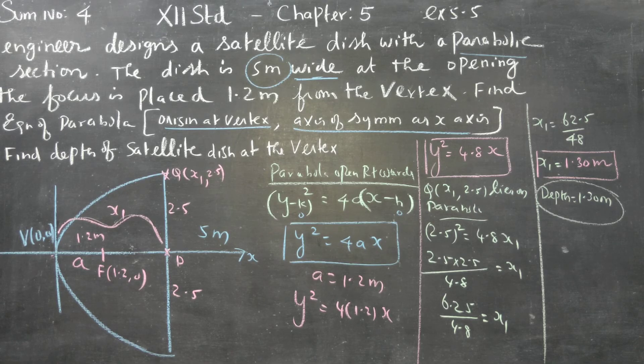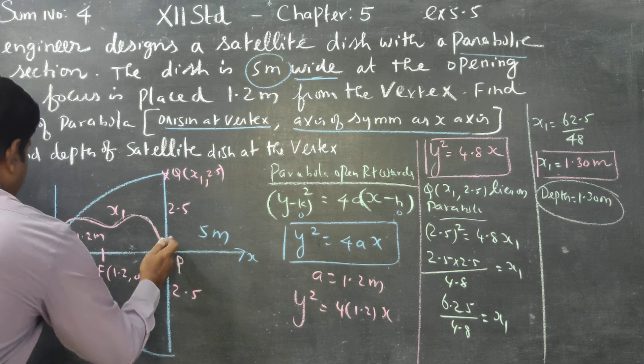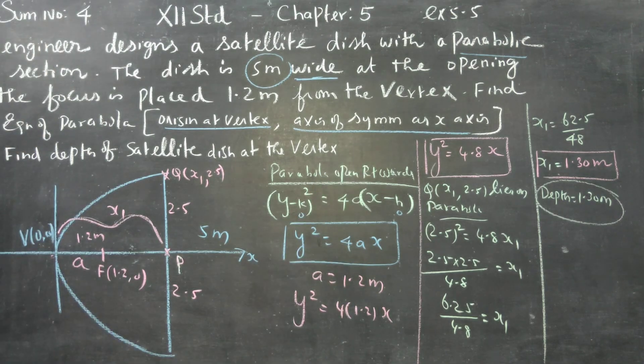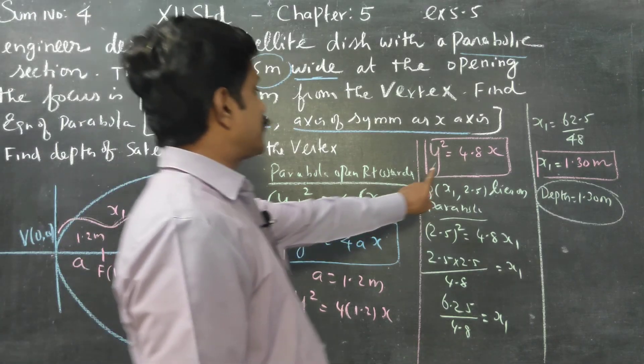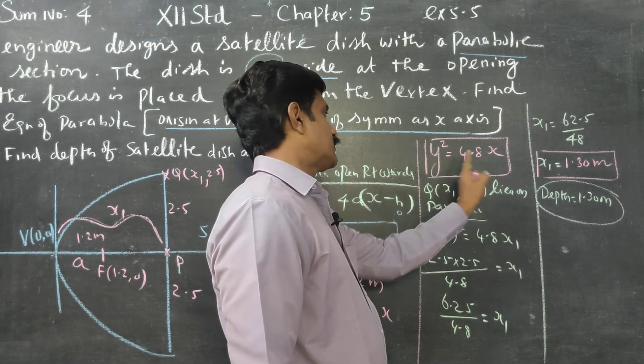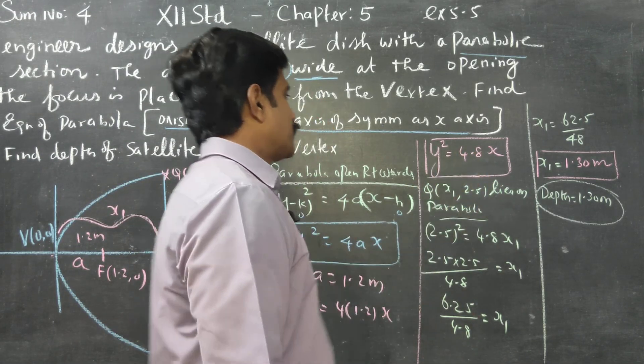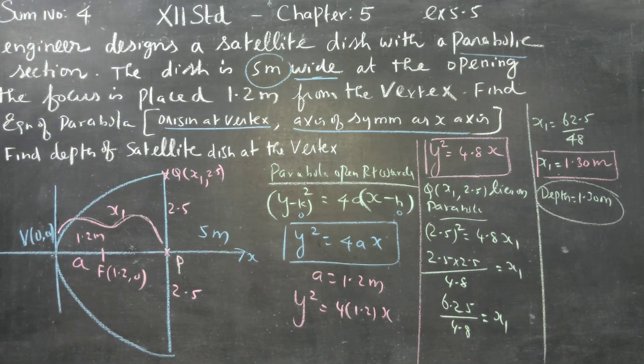Therefore, depth of the satellite will be 1.30 meters. This is the depth, that is the distance between V and P. If you learn, two things: one is equation of the satellite, that is the parabolic satellite formula, y square is equal to 4.8x, and depth is 1.30 meters. Thank you.